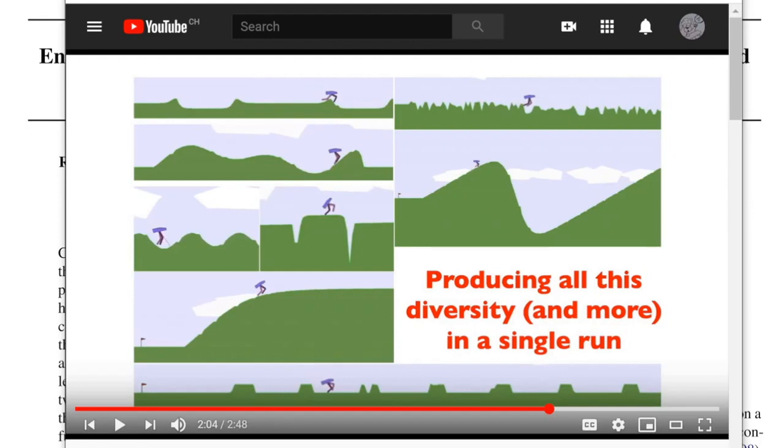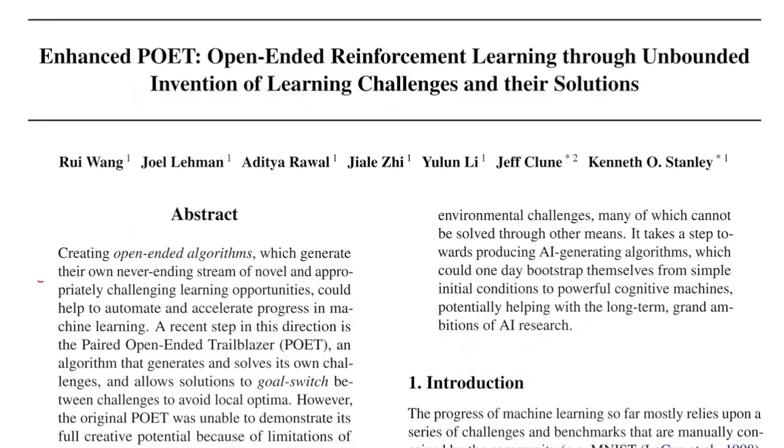So one run will produce all these different environments and agents that can solve them at the same time in parallel. It's a population-based method. If you haven't seen the video I did on Poet, I suggest you go see that now. This is simply an enhancement to it, and I expect people to know what I'm talking about. It's going to be a short video, but a good addendum to Poet.